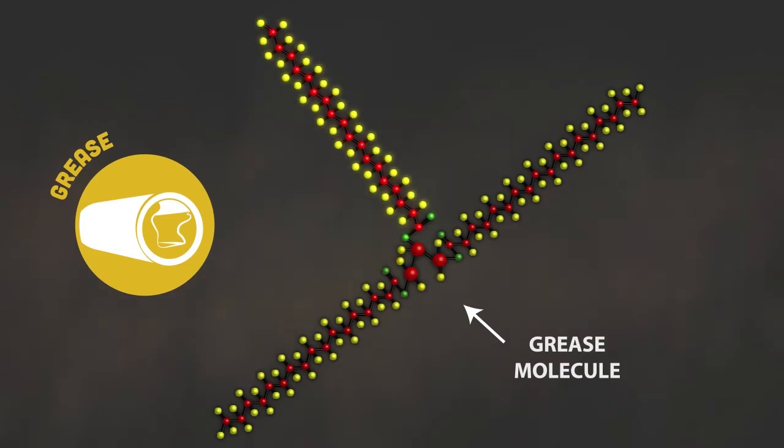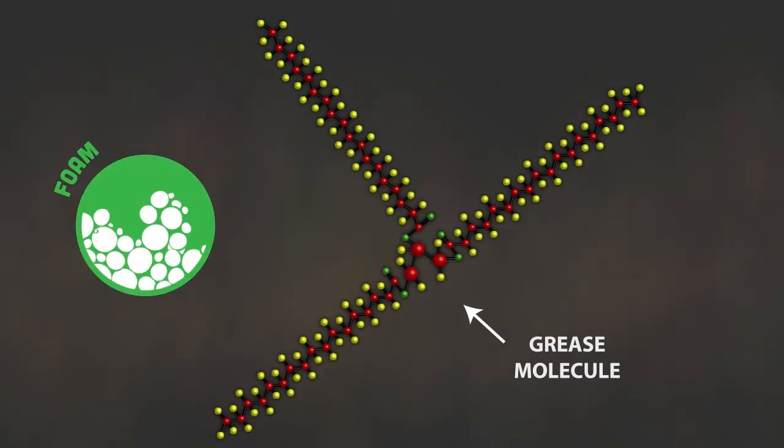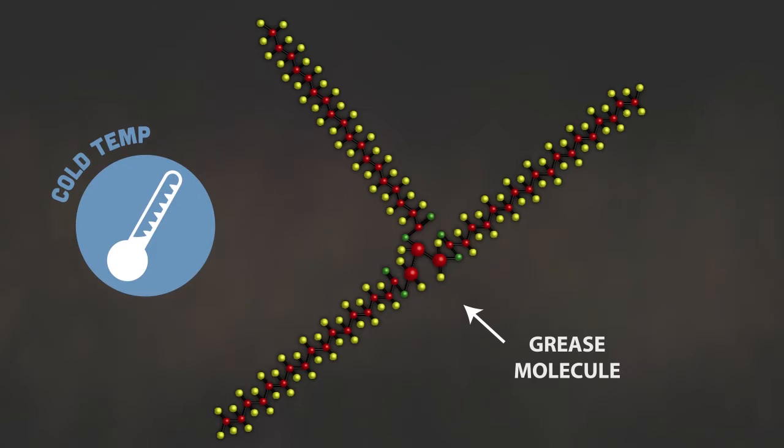Grease enters the wastewater plant as a stable structure pictured here. In this form, it's often used by foaming or bulking filaments. Good flock-forming bacteria have difficulty breaking grease down, especially when the water temperature is colder.